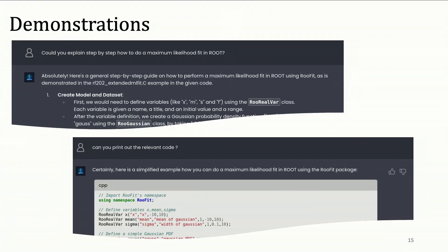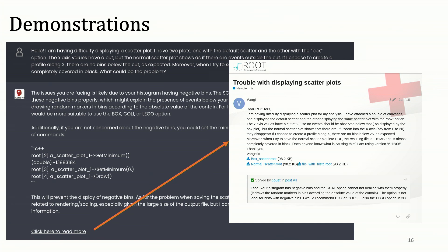Here's a demo on Root, the data analysis framework. We ask it how to do a maximum likelihood fit. If you ask ChatGPT this, it gives vague answers and is generally unable to code it. But Archie gave a full walkthrough, actually referenced the documentation — you can see there's a reference to the example — referenced real functions and real variables in Root, and output fully correct and relevant code. Even more exciting: if you ask a question that has a related forum post, it links the forum post at the bottom and bases its answer on it.